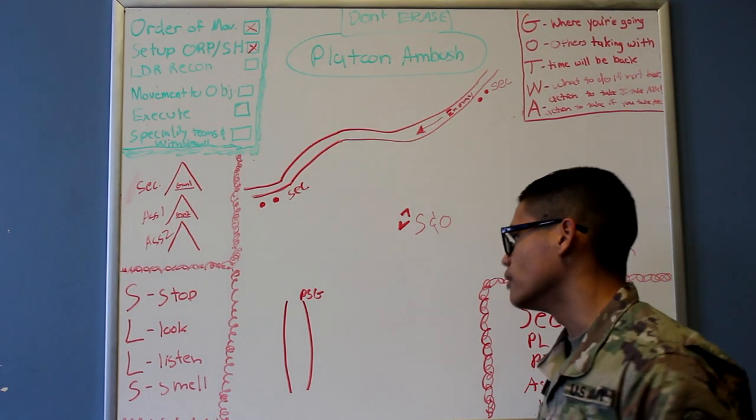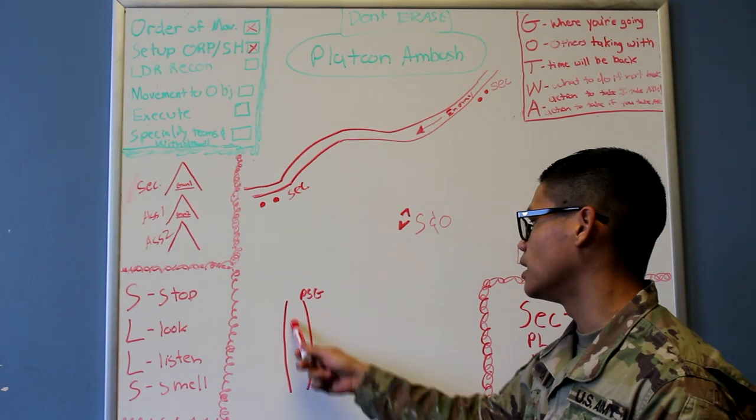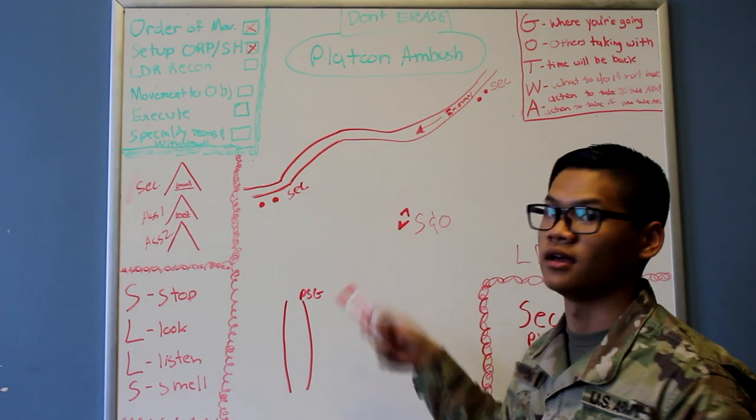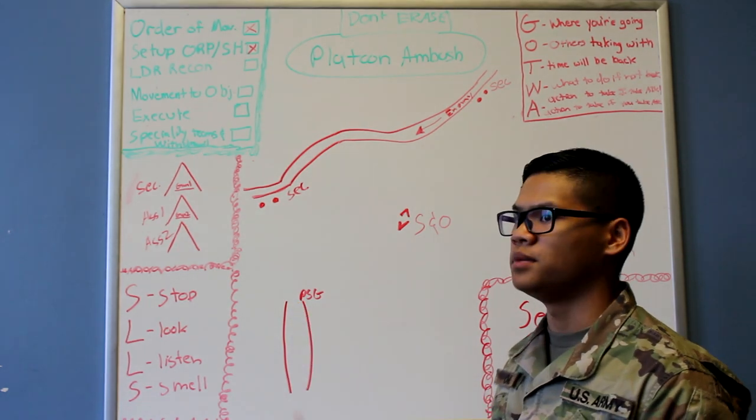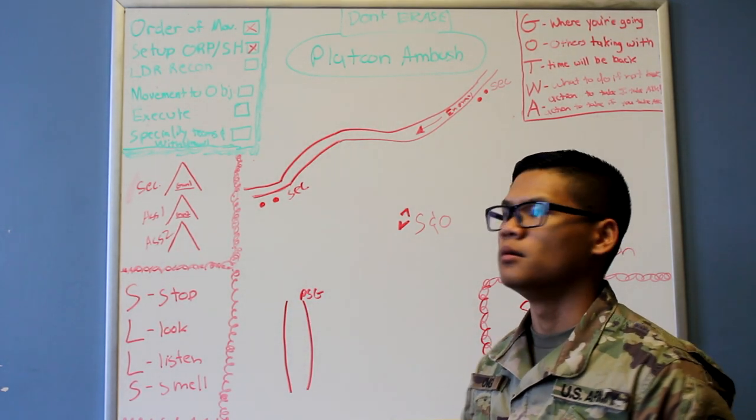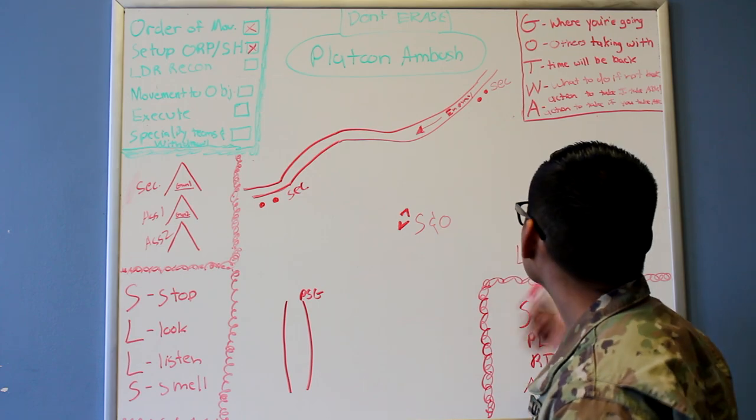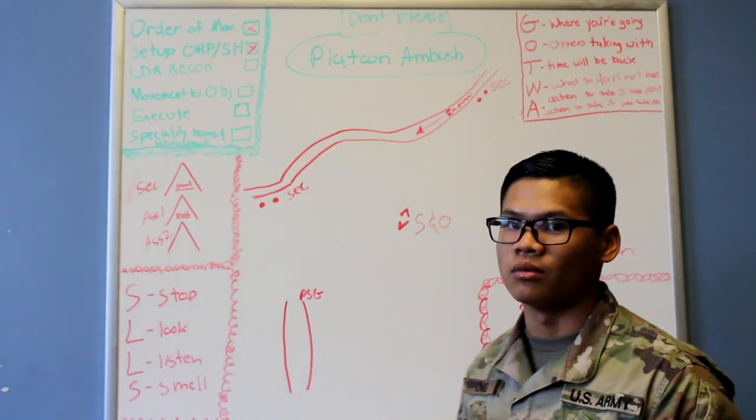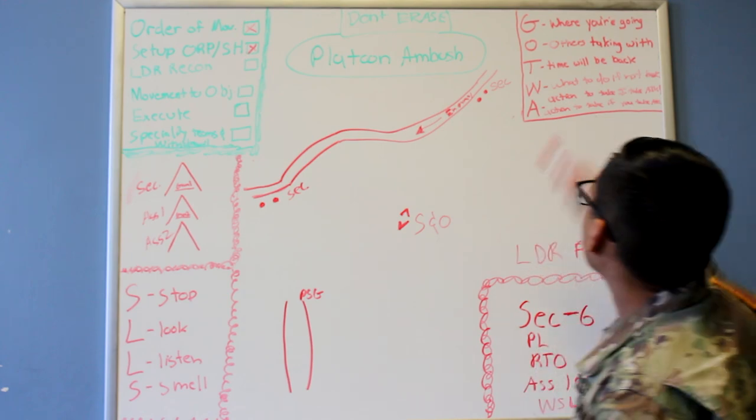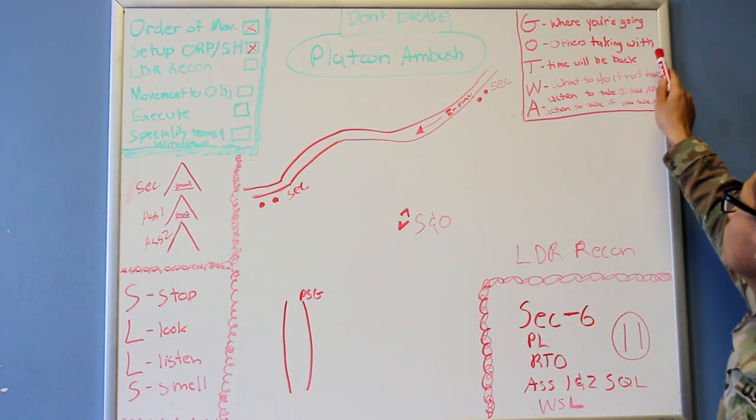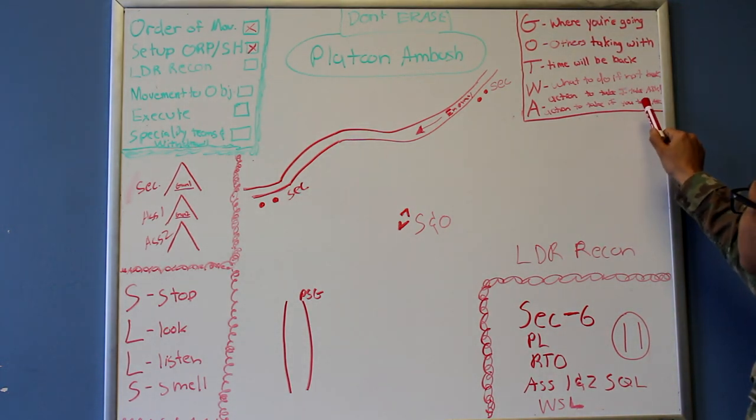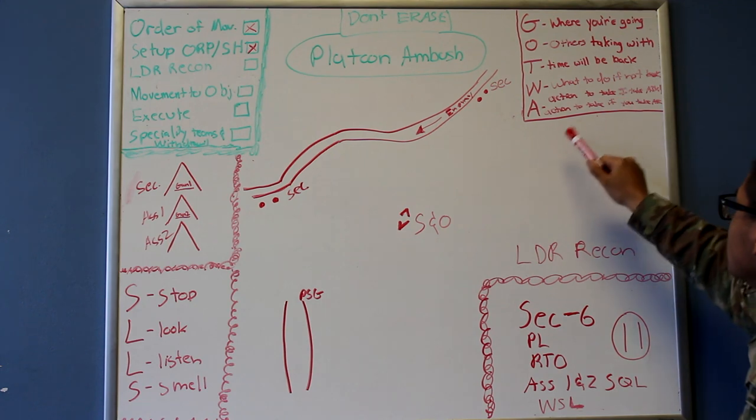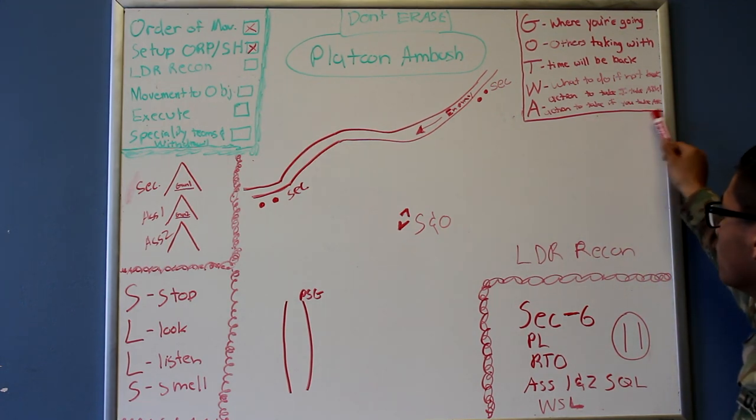Once you have consolidated all 11 people, he's going to bring them to the middle and get ready to head out to survey the objective. Before leaving the ORP, he's going to get with the PSG so the PSG can count him out. Before he leaves, he's going to give the PSG a GOTWA, which will be where he's going, others he's taking with him, timing he'll be back, what to do if he's not back in time, actions to take if he takes attack, and actions to take if the ORP takes attack.